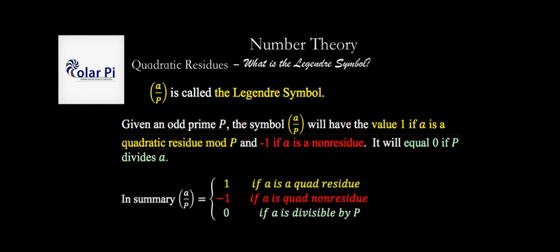To summarize more succinctly: a over p, which is called the Legendre symbol, will equal one if a is a quadratic residue mod p, negative one if a is a quadratic non-residue mod p, and zero if a is divisible by p. And again, p is an odd prime, that's every prime except for two.